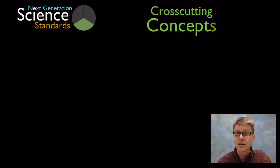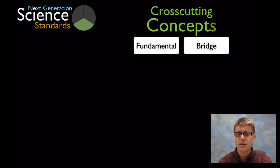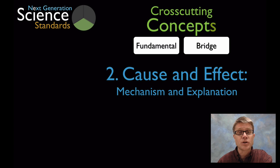Next is the area of cross-cutting concepts. There are going to be seven of those. These are fundamental concepts that bridge all the ideas. In other words you could have a cross-cutting concept in the life sciences or in the earth sciences or in engineering, and it's going to essentially be the same thing. Number two is cause and effect, looking at mechanism and explanation.